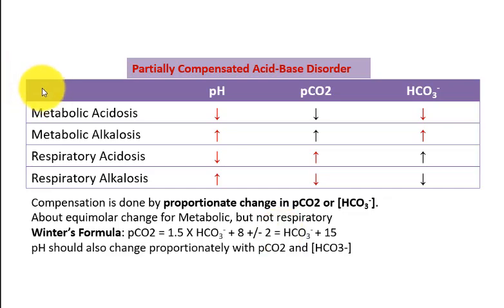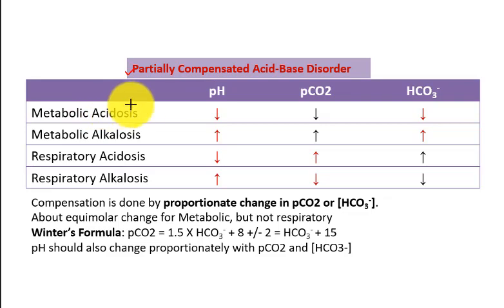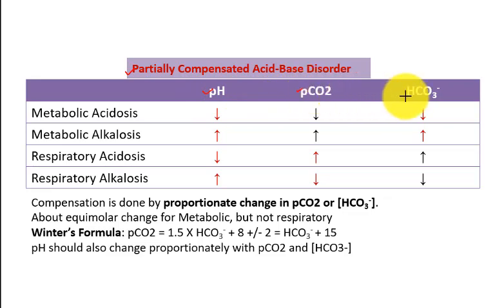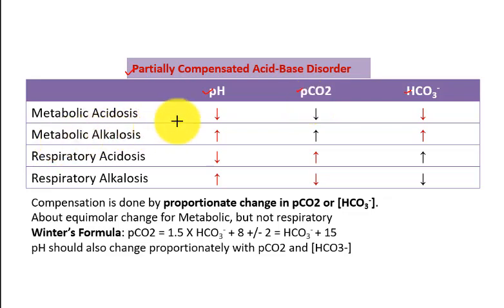This is the first and very important slide. This is the table of partially compensated acid-base disorders. Whenever a patient with an acid disorder comes to your clinic or when you do ABG analysis — the arterial blood gas analysis — you will get three very important parameters. When you see the ABG report, you will find pH changes, carbon dioxide partial pressure changes, and bicarbonate changes.